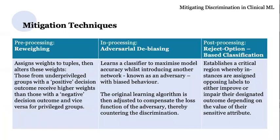The chosen mitigation techniques were re-weighing, adversarial de-biasing and reject option-based classification. These were chosen primarily for their generalizability, flexibility and ease of use. Re-weighing works by assigning weights to observations and then altering these weights to incline those from underprivileged groups towards a favourable outcome and vice versa for those from privileged groups. Adversarial de-biasing lends a classifier to maximise model accuracy whilst introducing another network, known as the adversary, which works with biased behaviour. The original learning algorithm is then adjusted to compensate the loss function of the adversary.